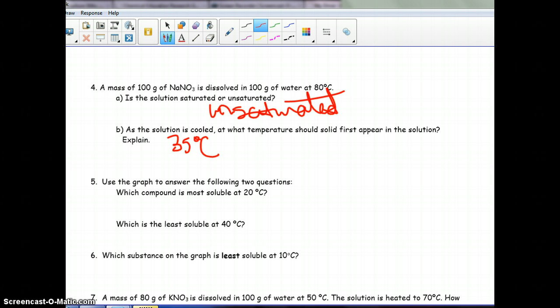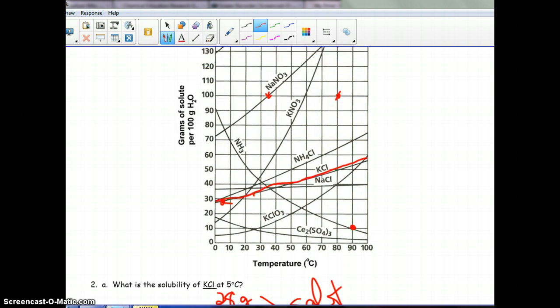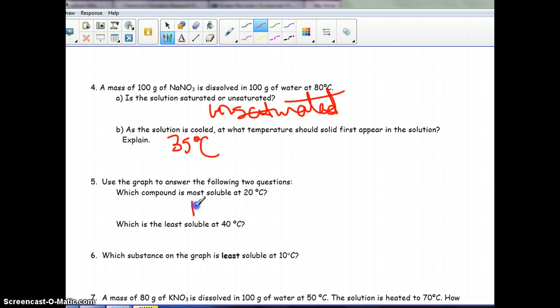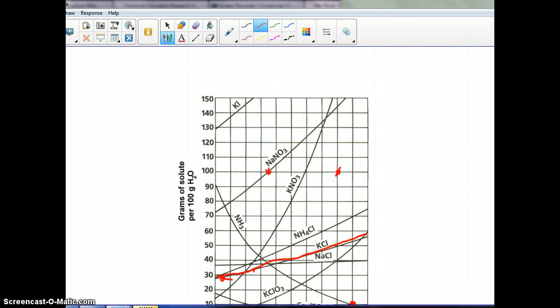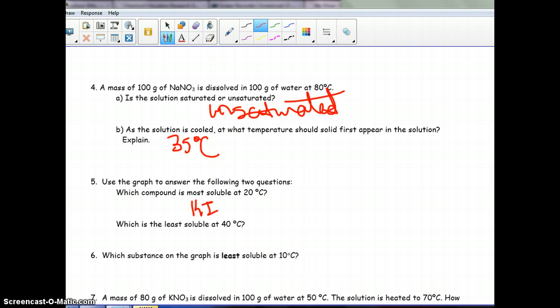Which compound is most soluble at 20 degrees? Let's go back to 20 degrees. Most soluble. That would be the highest. That's going to be KI. Which is least soluble at 40 degrees? Well, let's go back over here. 40 degrees. And, least soluble is going to be the CE2SO4-3. Because that's the lowest.